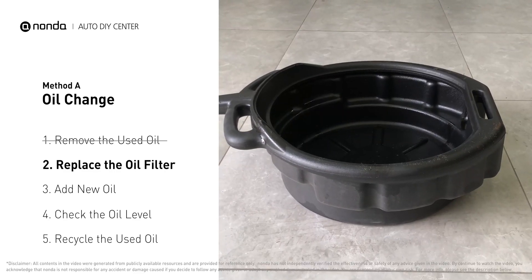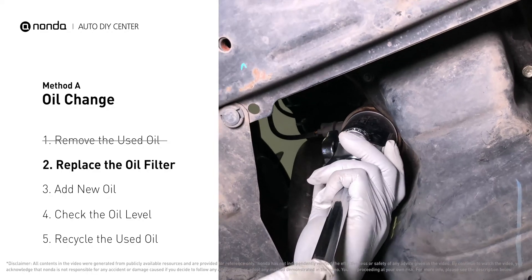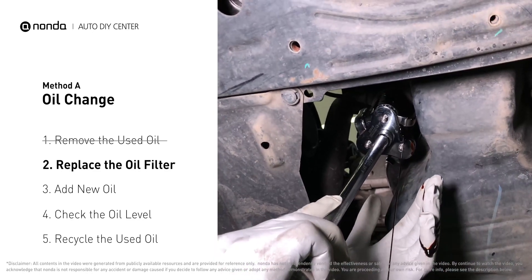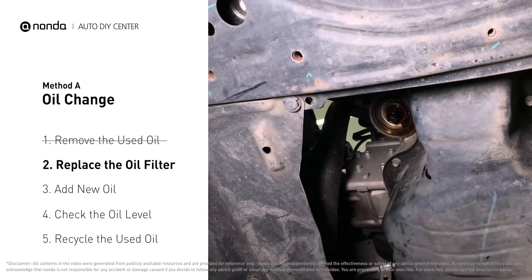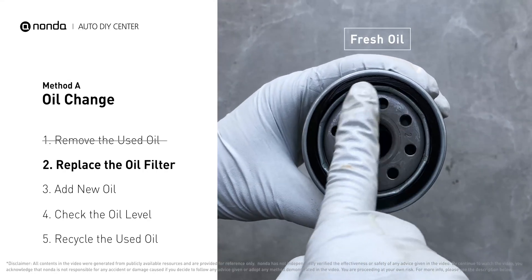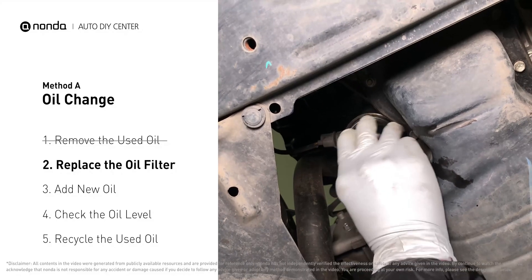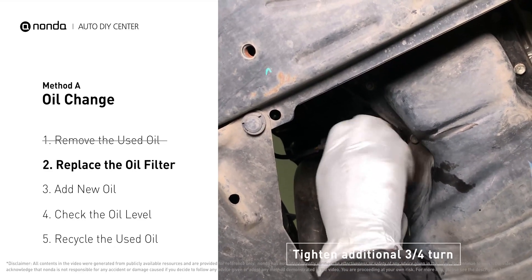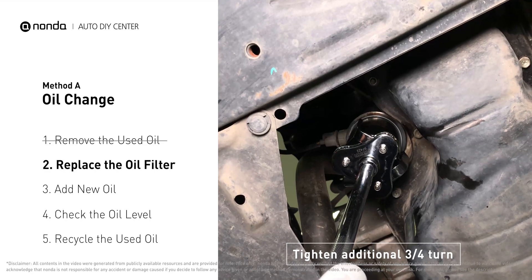Place the collection pan under the filter. There would be oil in the filter itself that could be hot, so it is important that the oil goes into the collection pan. Spread a bit of fresh oil evenly on the new filter's gasket, then install the new oil filter. Tighten the filter an additional three quarters of a turn. Be sure not to over-tighten.